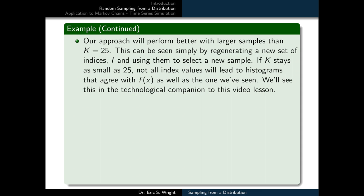Our approach will perform better with larger samples than k equals 25. This can be seen simply by regenerating a new set of indices i and using them to select a new sample. If k stays as small as 25, not all index values will lead to histograms that agree with f as well as the one we've seen. We'll see this in the technological companion to this video lesson.